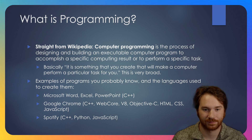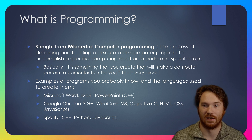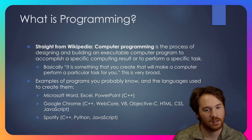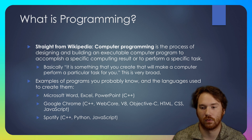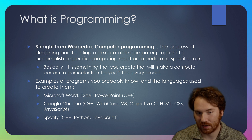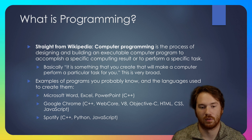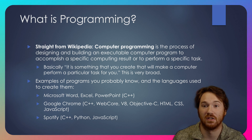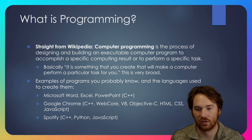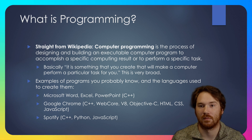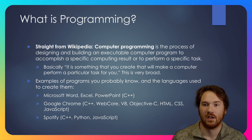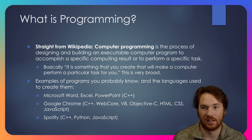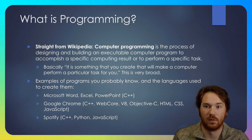So what is programming? I'm going to take the definition straight from Wikipedia: computer programming is the process of designing and building an executable computer program to accomplish a specific computing result or to perform a specific task. That's a bit of a mouthful, but basically it's something you create that will make a computer perform a particular task for you. You're trying to create a program and a set of instructions to do something — that could be as simple as adding two numbers together or as complicated as predicting the next word in a sentence like ChatGPT.